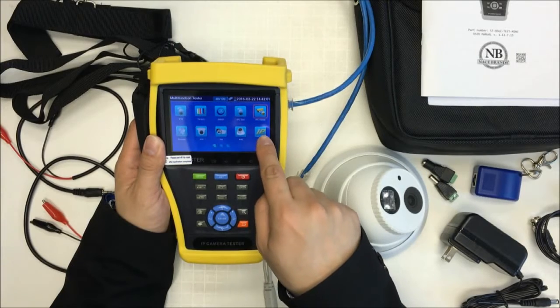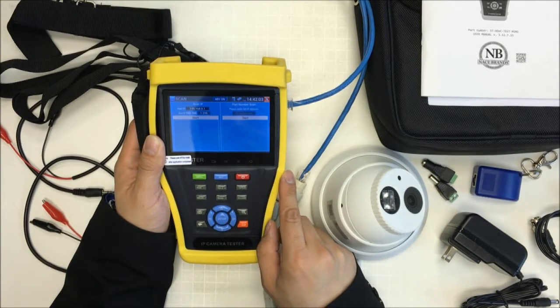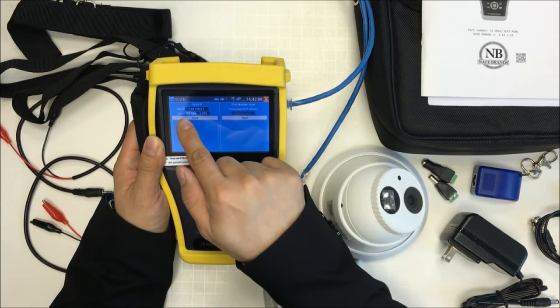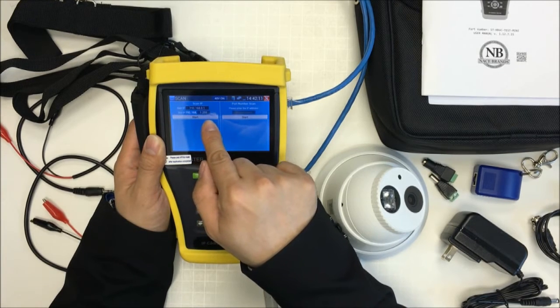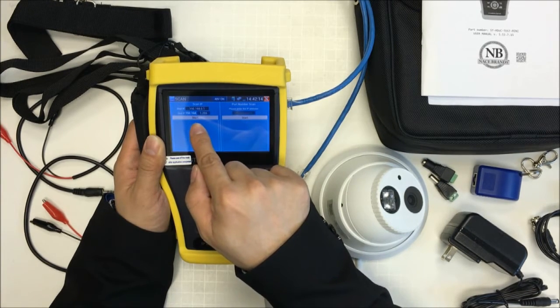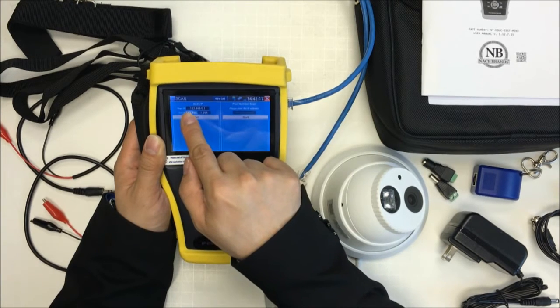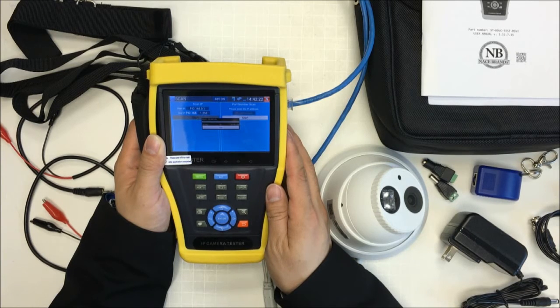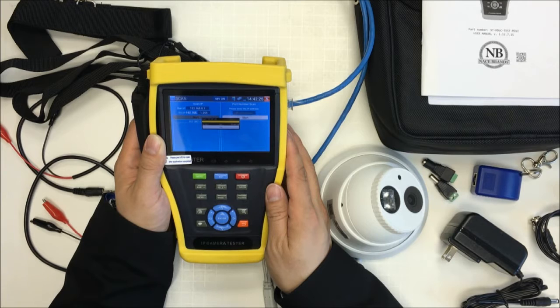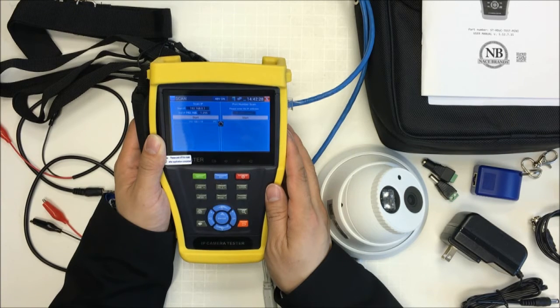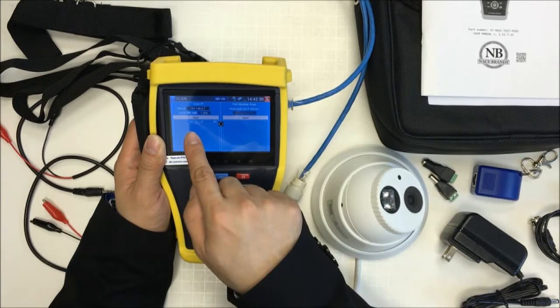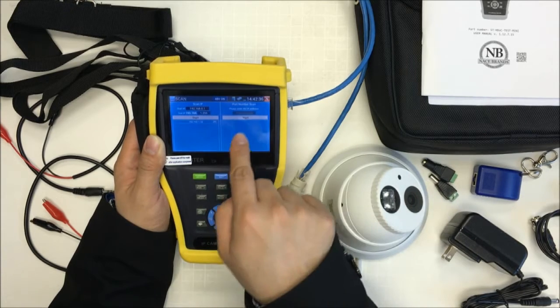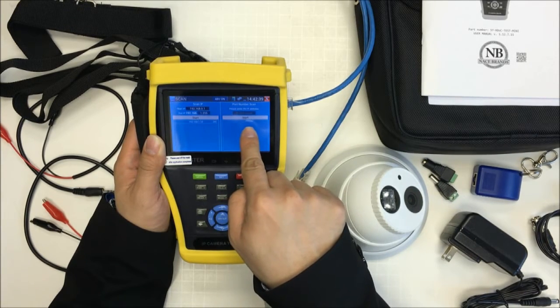Now we can go IP scan. On the IP scan, we can scan the IP address for this camera. We can try with the starting IP 192.168.0.1, ending IP 192.168.1.255. We found the IP address 192.168.1.10 for this IP camera. And also you can scan the port for this IP camera.